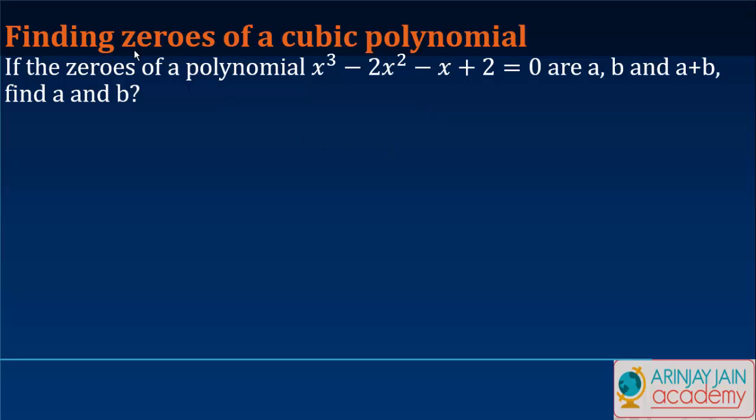Finding zeros of a cubic polynomial. Now you are given that if the zeros of a polynomial x³ - 2x² - x + 2 = 0 are a, b and a+b.